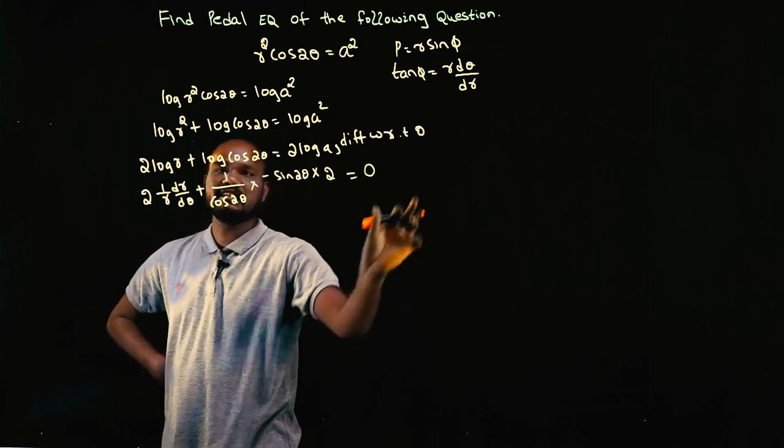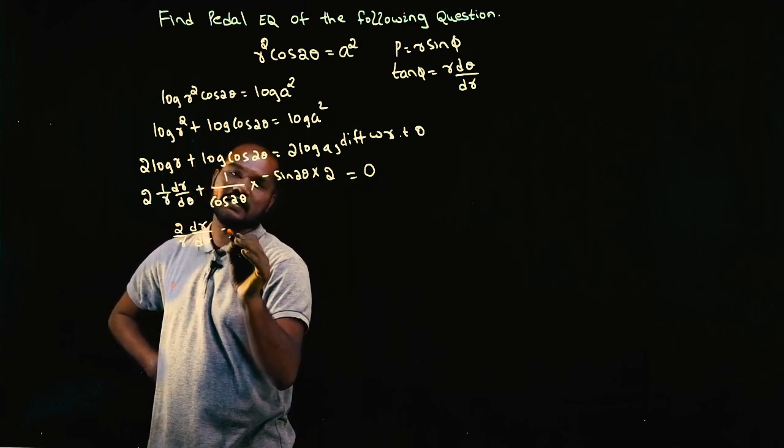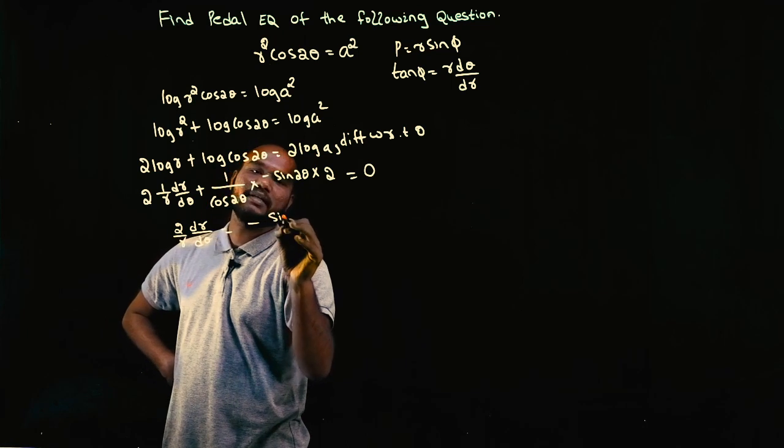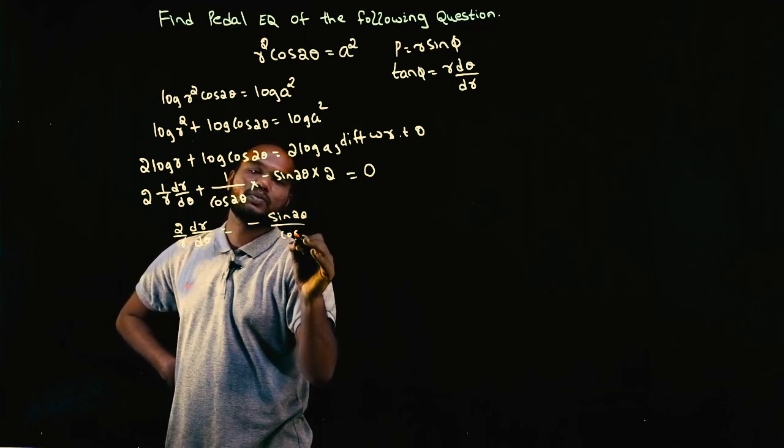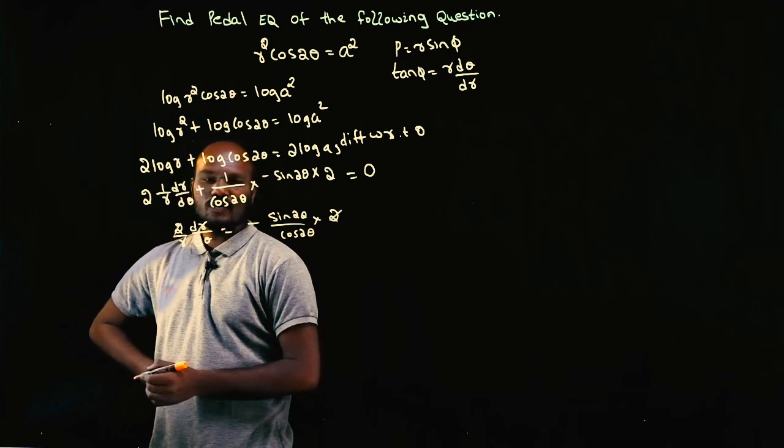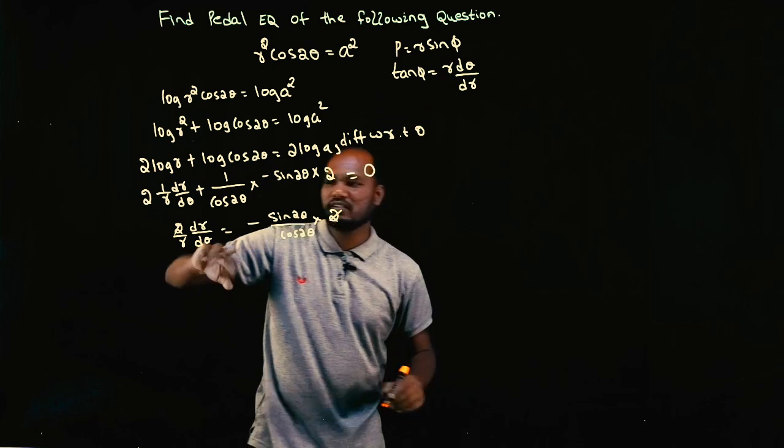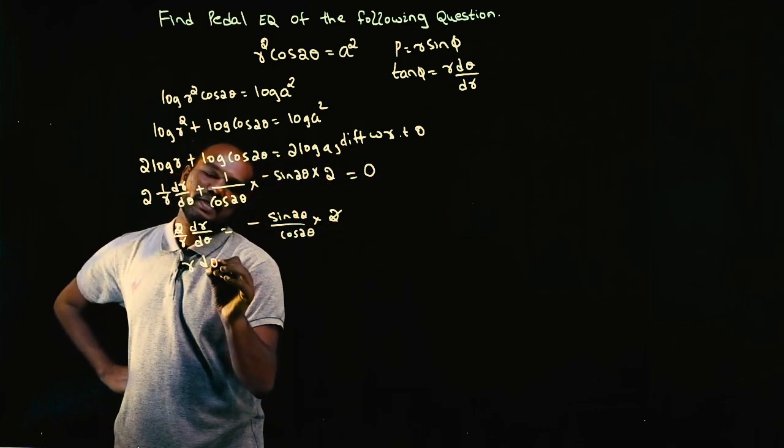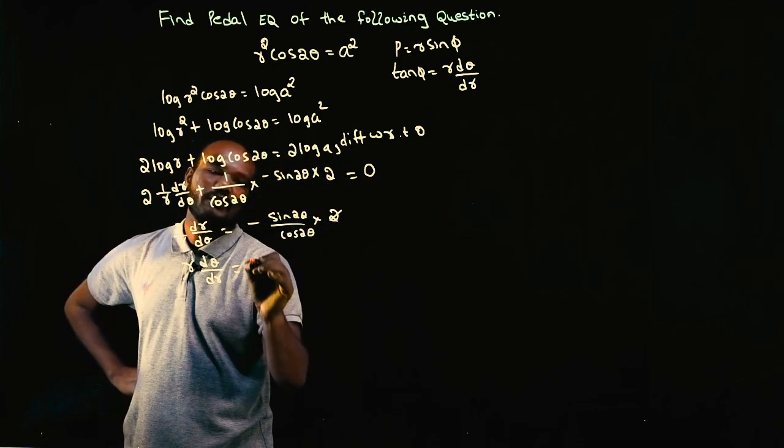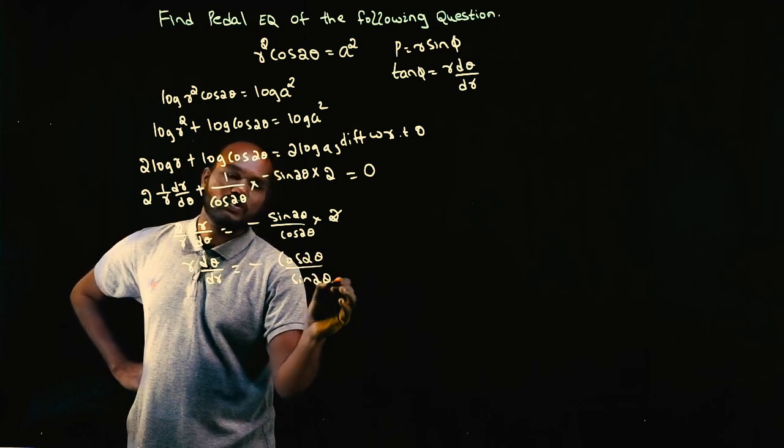Plus times minus is minus, so I can send this side. So 2 by R dr by d theta equals minus sin 2 theta upon cos 2 theta times 2. I can take this 2 down. So I have 1 by R, but I'm not interested in 1 by R, I'm interested in R. So just flip it. So R times d theta by dr equals minus cos 2 theta upon sin 2 theta.